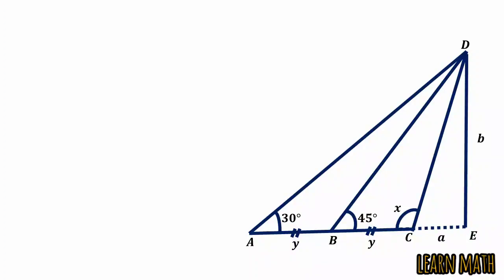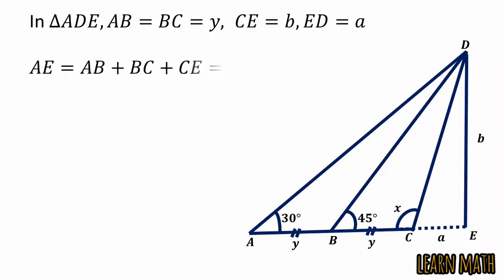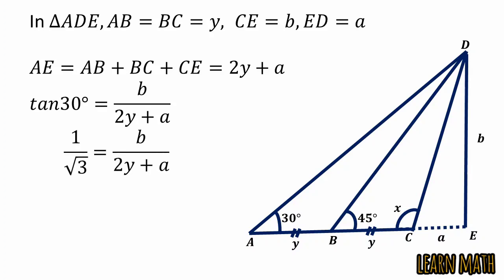In triangle ADE, AB equals BC equals y, CE equals a, and ED equals b. AE equals AB plus BC plus CE, which is 2y plus a. Take tangent 30 degrees equals perpendicular over base, so b divided by 2y plus a.